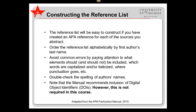Finally, you will construct a reference list. The reference list will be easy to construct if you have created an APA reference for each of the sources you abstract. Here are some tips: order the reference list alphabetically by the first author's last name. Avoid common errors by paying attention to what elements should and should not be included, which words are capitalized and/or italicized, and where punctuation goes. Double check the spelling of authors' names. Note that the manual recommends the inclusion of digital object identifiers (DOIs), however this is not required in this course.